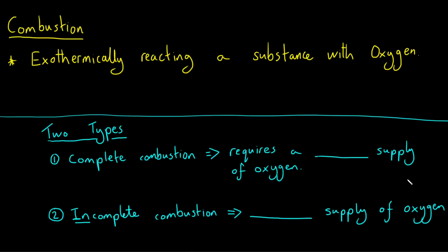Here is our definition of a combustion reaction. A combustion reaction is when we exothermically react a substance with oxygen. If you want to remember that in a simpler way, a combustion reaction simply means that we are burning something. Exothermic, if we remember from Unit 1 National 5, means to release heat to the environment. And that's exactly what we're doing when we're combusting something — reacting the substance with oxygen to produce heat.